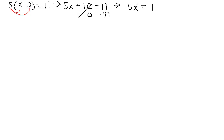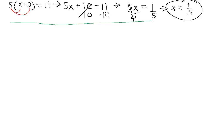We have one more step. Our variable is being multiplied by 5. We learned that when we're multiplying a whole number with our variable, we can simply divide by the coefficient, and that division undoes the multiplication. Whatever we do on one side, we have to do on the other side — that keeps the equality of our equation. The 5's cancel out, and x equals 1 fifth. Always remember, we can plug our value back into the original equation to verify it's a valid solution.